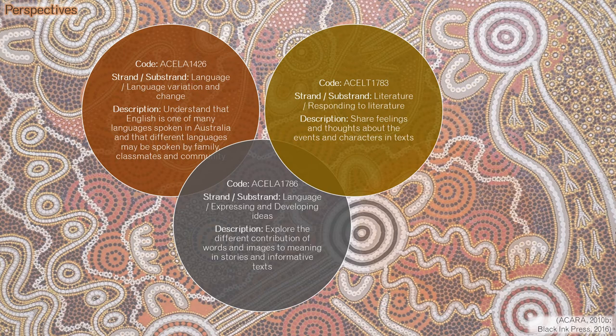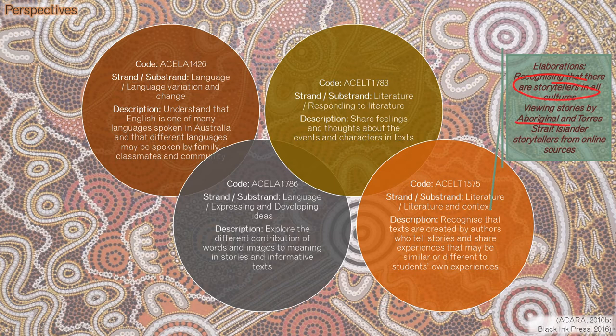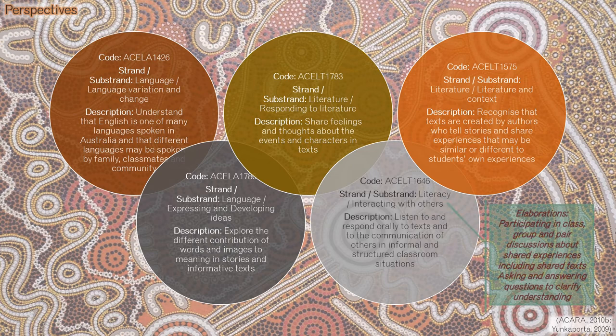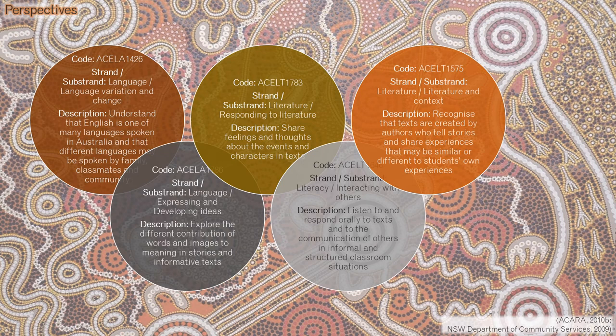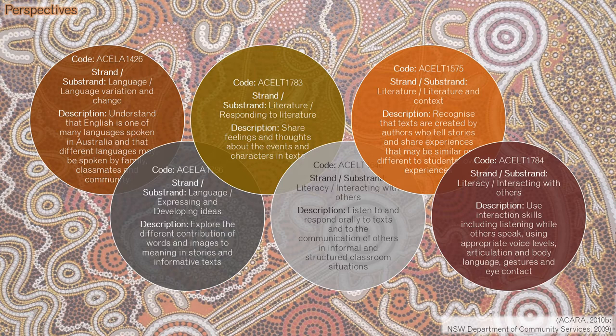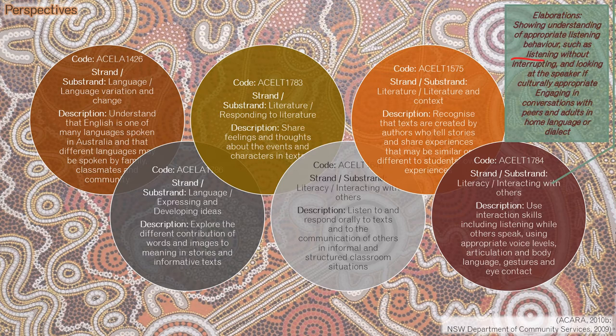Firstly, recognizing that texts are created by authors who tell stories and share experiences similar or different to our own, where Auntie Gloria Wayland's indigeneity as the storyteller may be explored. Listening to and responding orally to texts and to the communication of others aligns with yarning circles, within which students would learn about culture through cultural methods, creating a deeper, more authentic learning experience. Additionally, using interaction skills including listening while others speak, appropriate voice levels, articulation, body language, gestures, and eye contact describes effective group discussion skills, including culturally appropriate behaviors and an opportunity to use home languages in context.